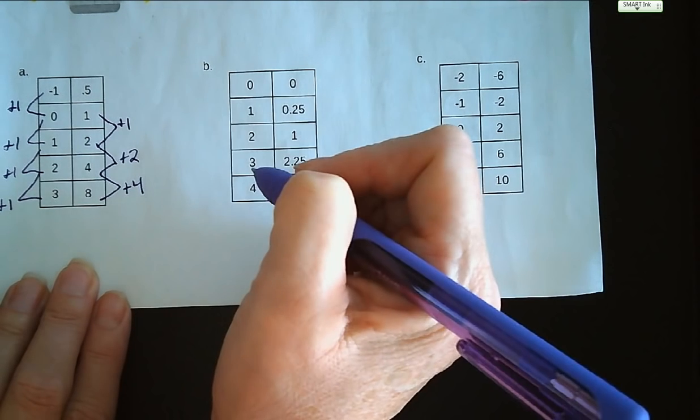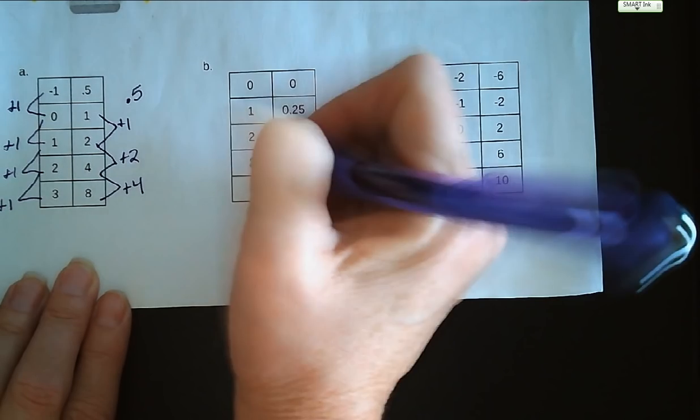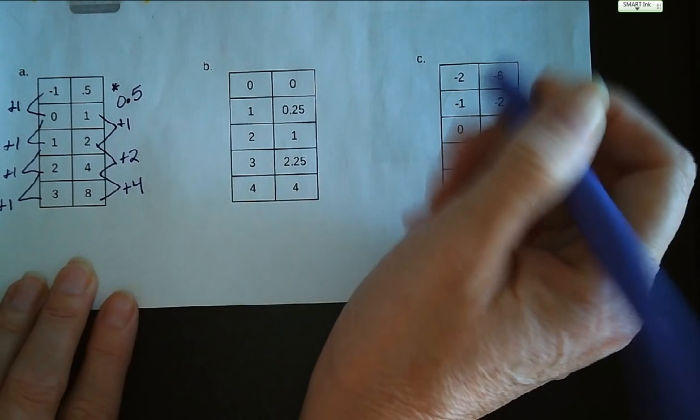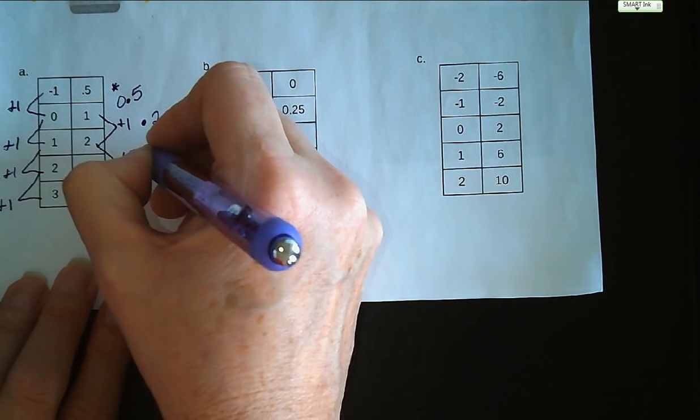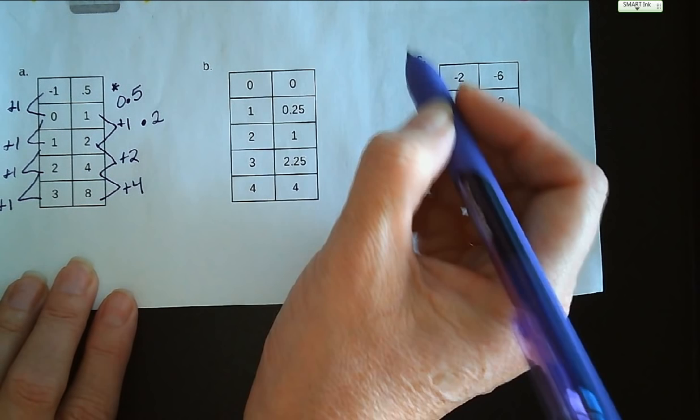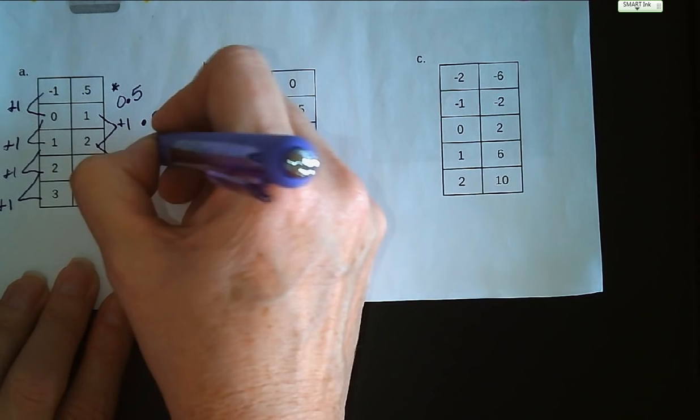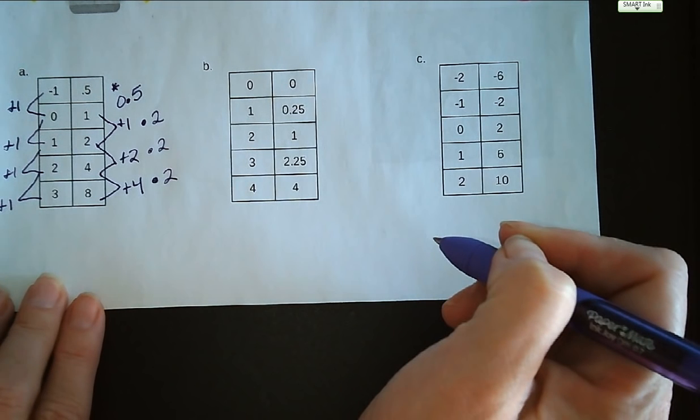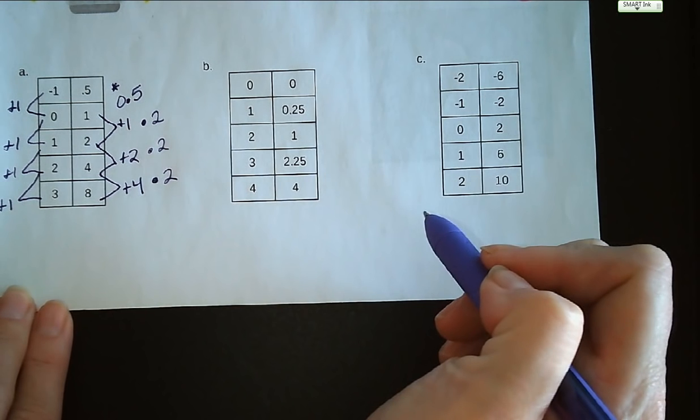So we have second differences of 0.5, then 1, then 2—not quite consistent. So let's try the exponential pattern and see if we're multiplying by something each time. To go from 1/2 to 1, we're multiplying by 2. From 1 to 2, multiply by 2. From 2 to 4, multiplying by 2. 4 to 8, multiplying by 2. So this is exponential.